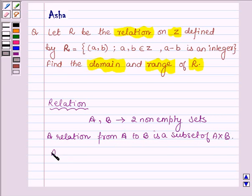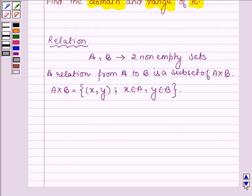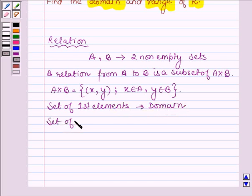A × B is the set of all ordered pairs (x,y) such that x ∈ A and y ∈ B. The set of all first elements of the ordered pairs is called the domain of the relation, and the set of all second elements is called the range of the relation.